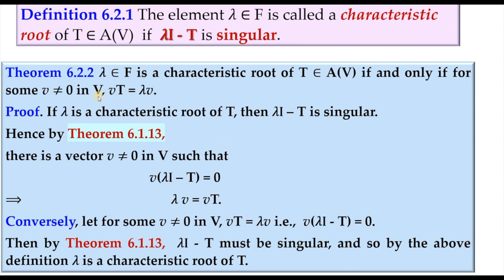The first theorem in section 6.2 gives the criterion for any lambda to be a characteristic root of T. Lambda is a characteristic root of T in F if and only if for some non-zero vector V in V, the image of V under T is lambda times V.